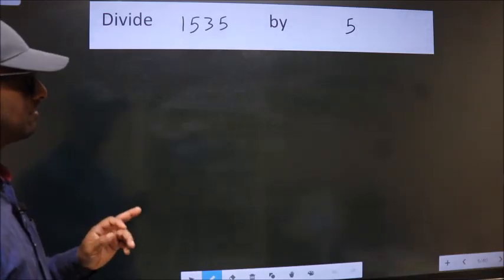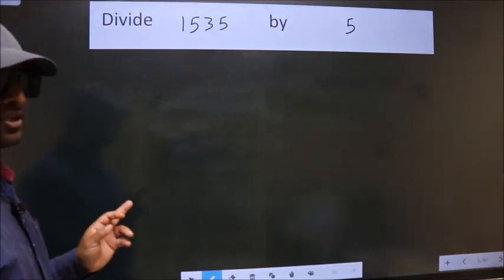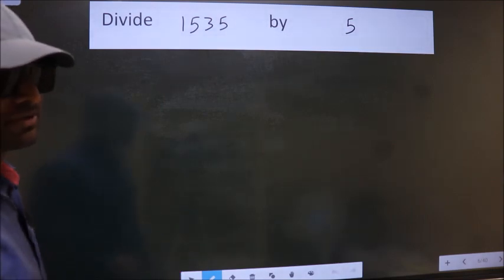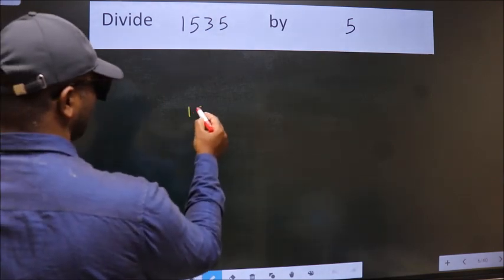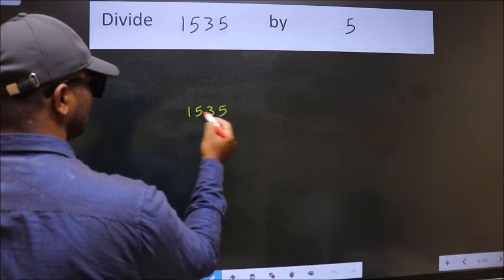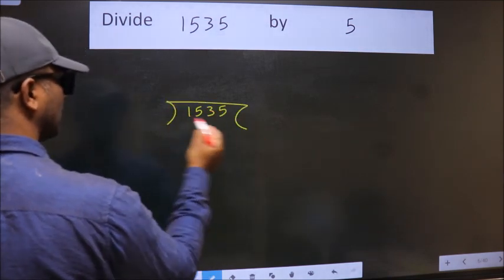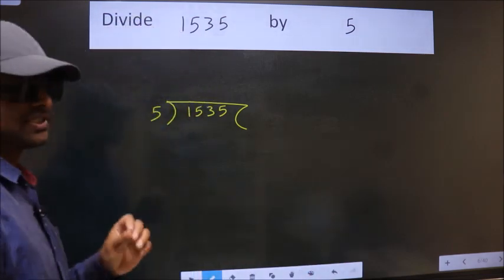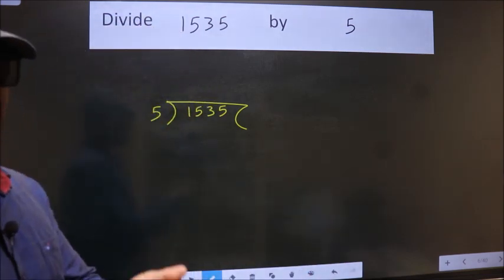Divide 1535 by 5. To do this division we should frame it in this way: 1535 here, 5 here. This is your step 1.